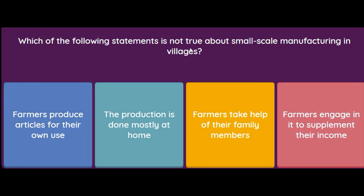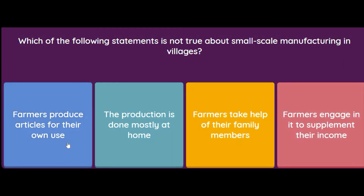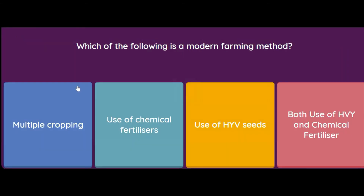Which of the following statement is NOT true about small scale manufacturing in villages? Farmers produced articles for their own use; the production is done mostly at home; farmers take help of their family members; or farmers engage in it to supplement their income? Small scale manufacturing is for business purposes, so the statement that is NOT true is: farmers produce articles for their own use.